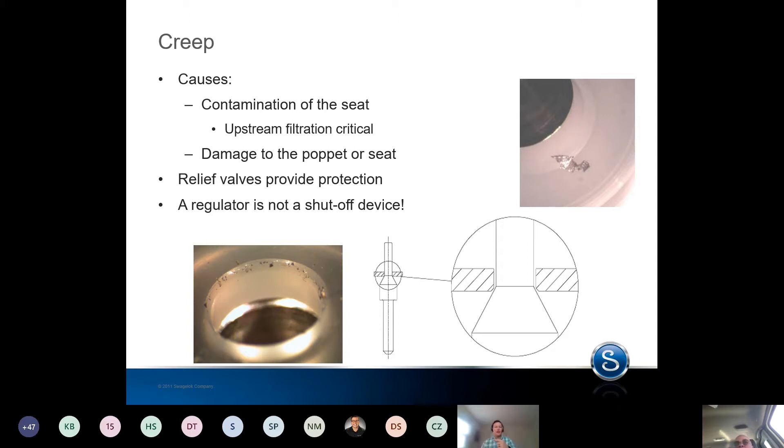Now, as it zips down the line, the space between the seat and the poppet is very small to create those pressure drops. So that burr is moving pretty fast and it's going to embed itself in that seat, right? Causing a small leak path that is between the poppet and the seat. And even if you get some extra closing force and maybe you have a higher inlet pressure, you still might not be able to fully seal and you'll see creep.